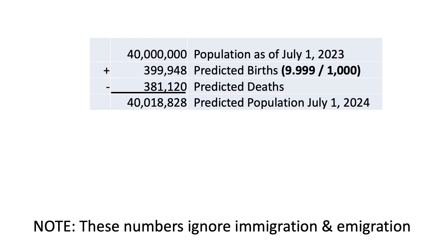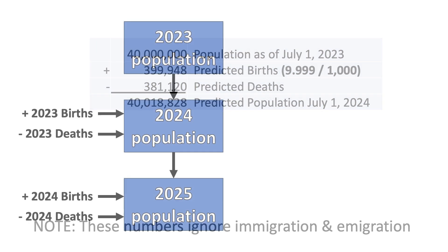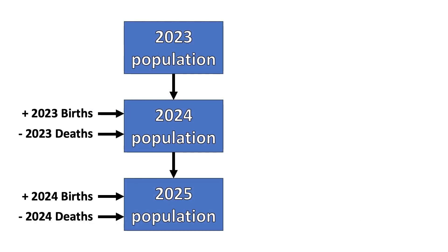If we assume excess deaths in Canada remain at 20% above UN projections, that would give us 381,120 deaths. So we would expect the population of Canada on July 1st, 2024 to be 40,018,828. Again, this ignores people moving into or out of the country. We then just repeat this process by predicting the births and deaths for the following year.